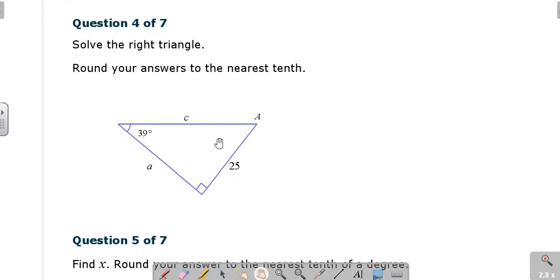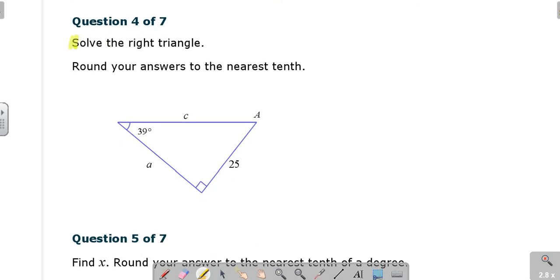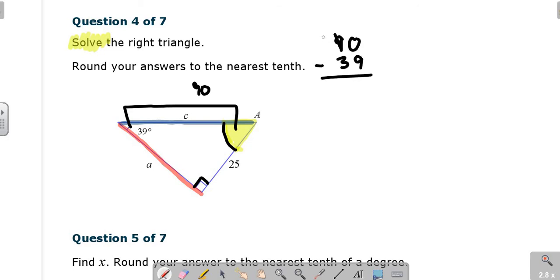Now we start solving for the triangle. When it says solve for a triangle, solve, it means find everything that's unknown. So you're going to be finding three things here. One, you're going to be finding a missing angle. Two, you're going to be finding two different side lengths.